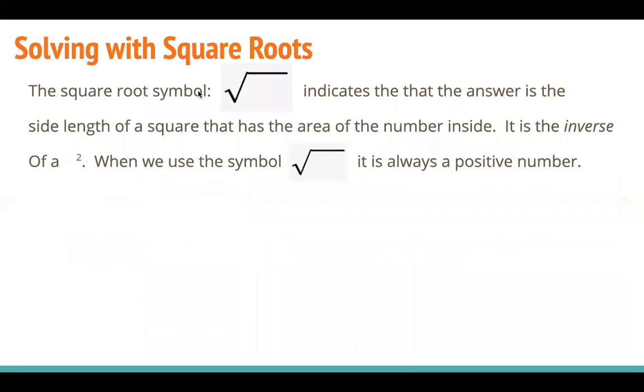So if I'm picturing square roots, really the relationships we were looking at were square and square roots, and they're inverses. The square root symbol indicates that the answer is the side length of a square that has the area of the number inside. It is the inverse of a square. When we use the symbol square root, it is always a positive number, just something to know.